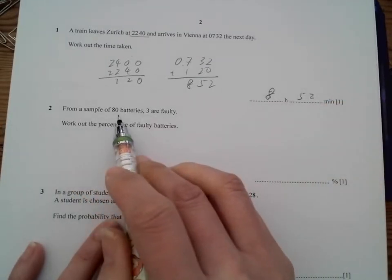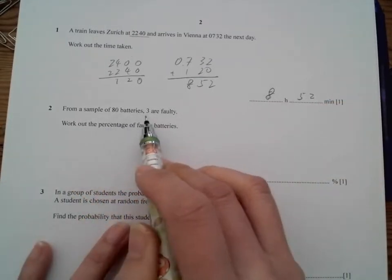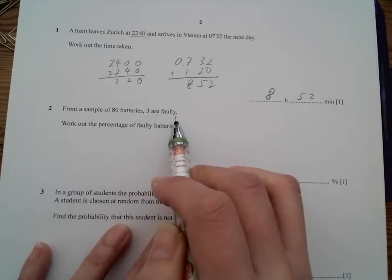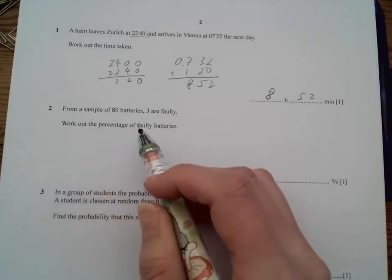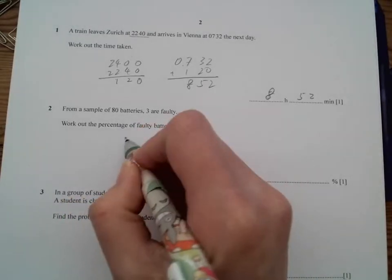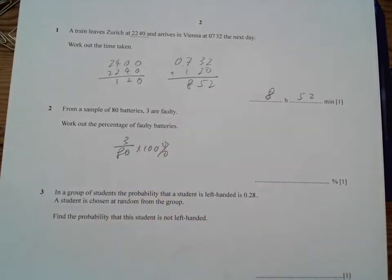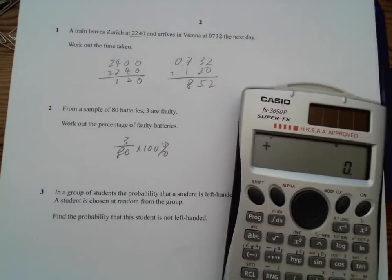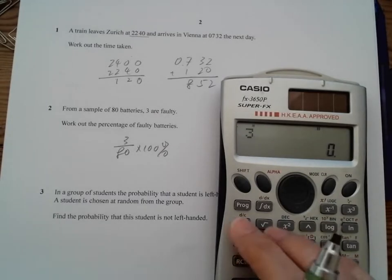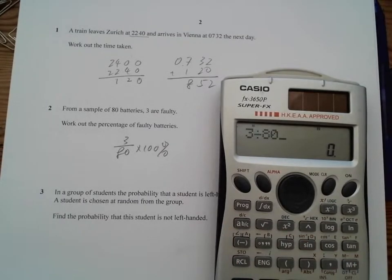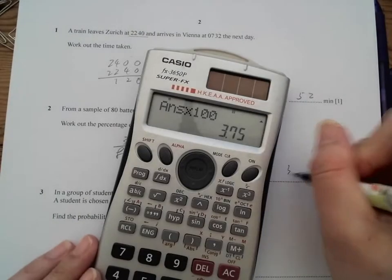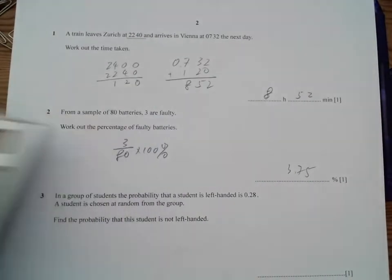For a sample of 80 batteries, 3 are faulty. We got the percentage of this is faulty. So we have 3 out of 80 times 100%. So all you need to do is use your calculator. 3 divided by 80 times 100. So we have 3.75%.